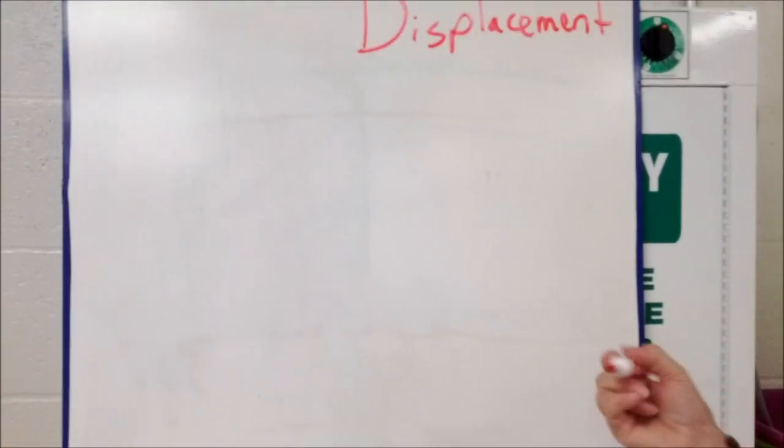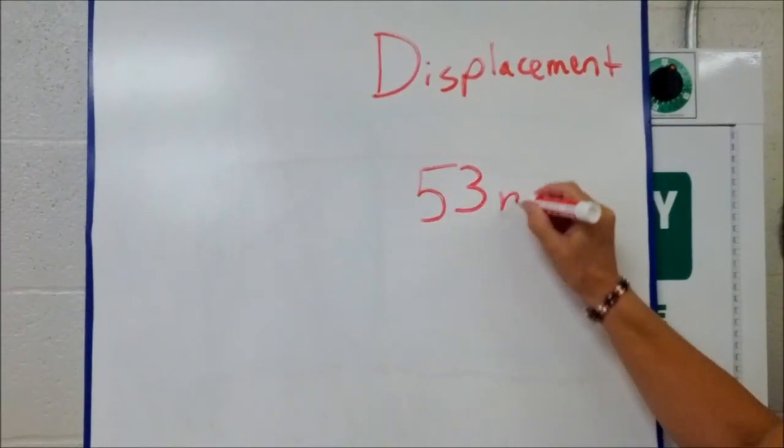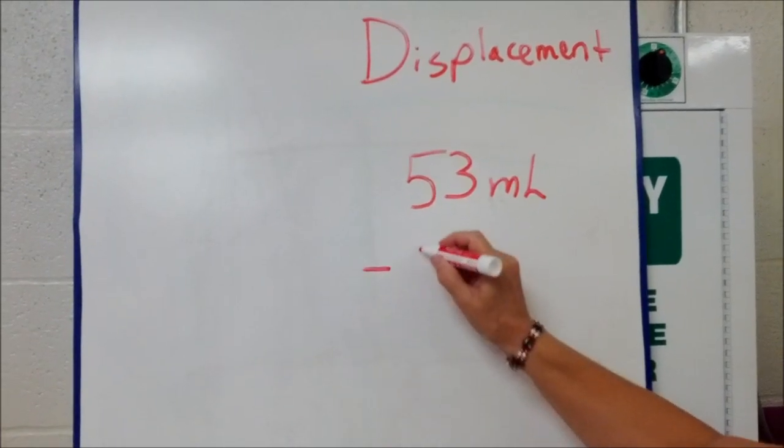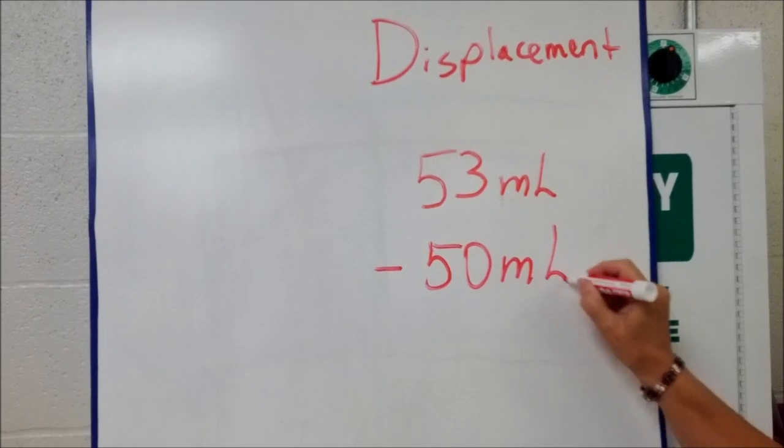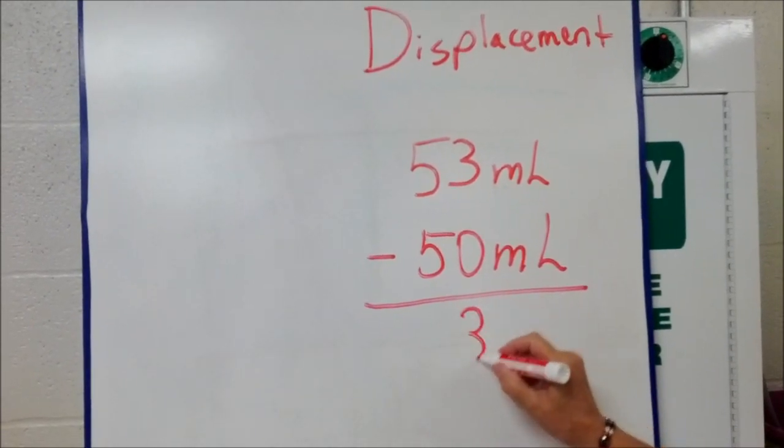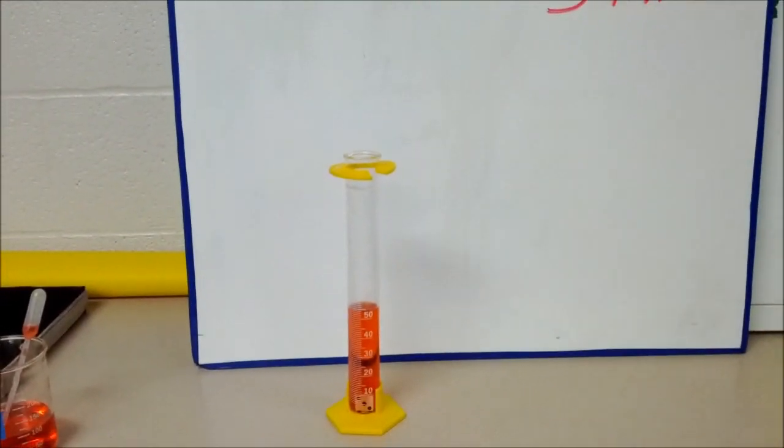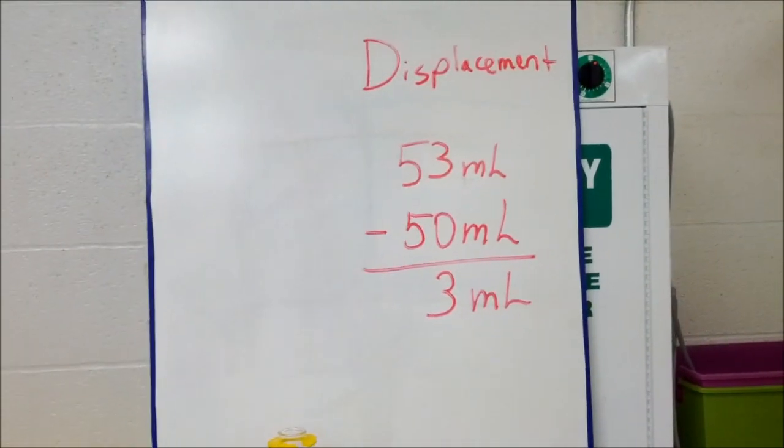Okay, so we started out with 50, we put the number cube in and now it's 53. So how do we find our volume? All right, so now it's at 53 milliliters, and we subtract what it was originally, which was 50 milliliters. And that equals, difficult math here, 3 milliliters.